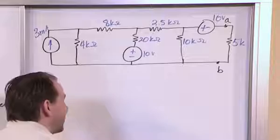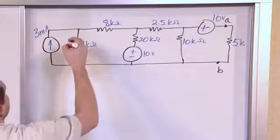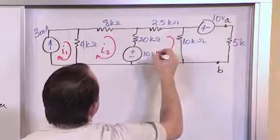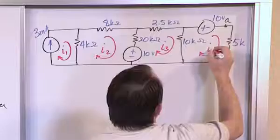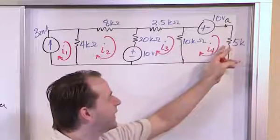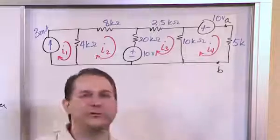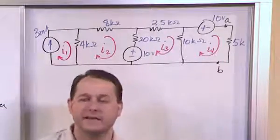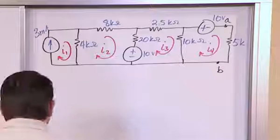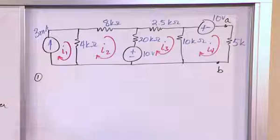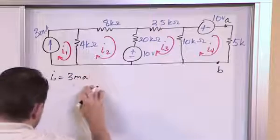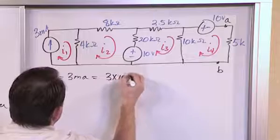We define four mesh currents: I1, I2, I3, and I4. Mesh 1 borders the 3 milliamp current source, so I1 is trivially equal to 3 times 10 to the minus 3 amps. Once we find I4, it's just I4 squared times R to get the power delivered to the load for maximum power transfer.